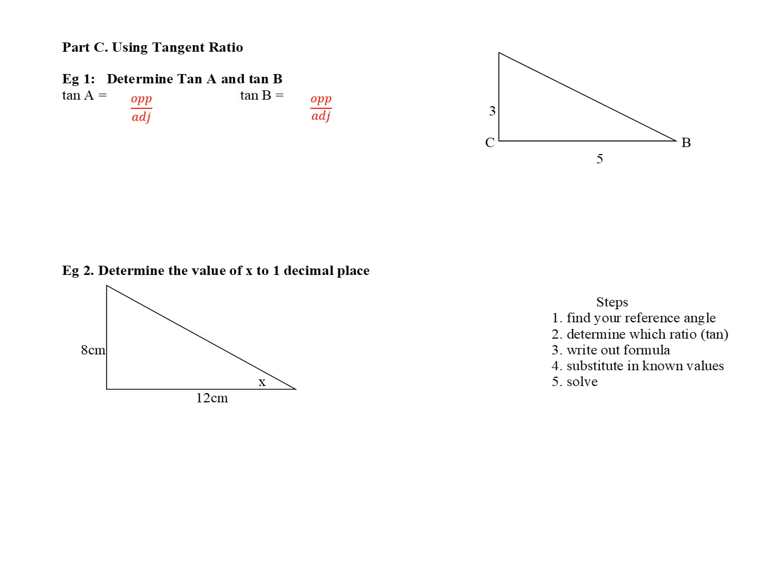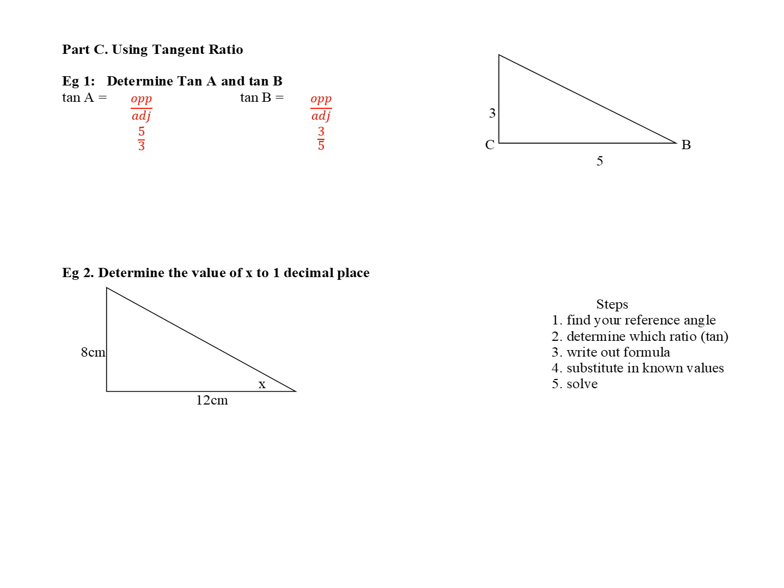Determining tan A and tan B. First, what you should notice is that this is not asking us for the angle, it's asking us for the ratio. So all we have to do is be able to identify our sides. So there's A, there's my right angle. And what do I notice? I notice that for tan A, my opposite is 5, my adjacent is 3. However, for tan B, it is reversed. Thus, when I do tan A, my opposite is 5, my adjacent is 3. For tan B, my opposite is 3, my adjacent is 5.